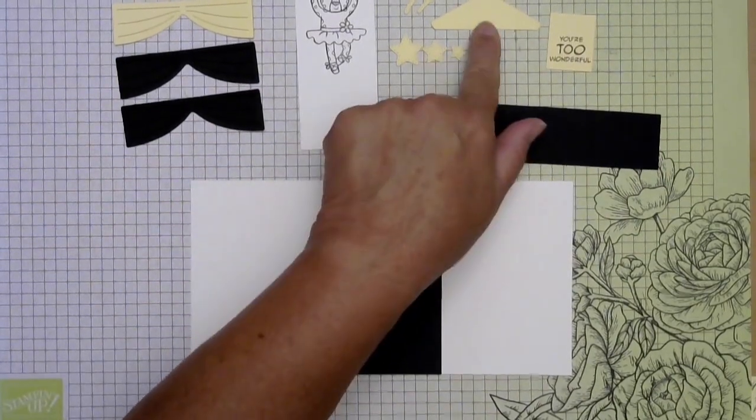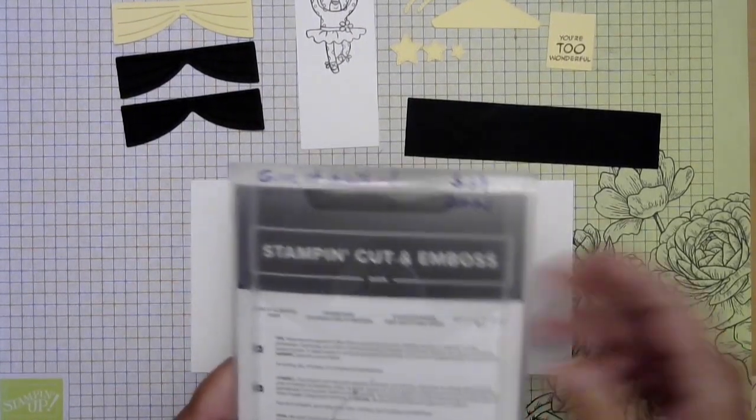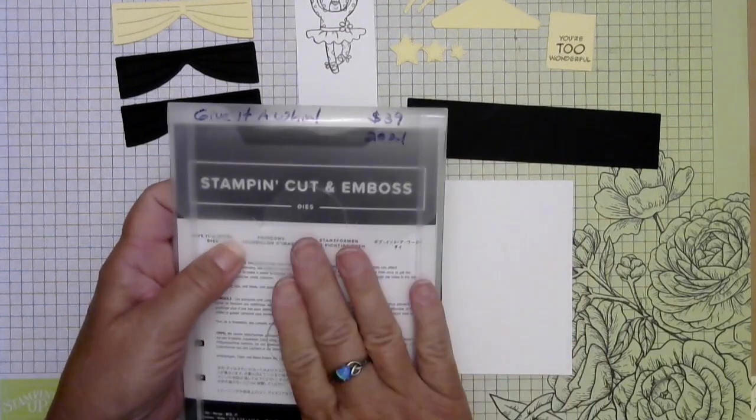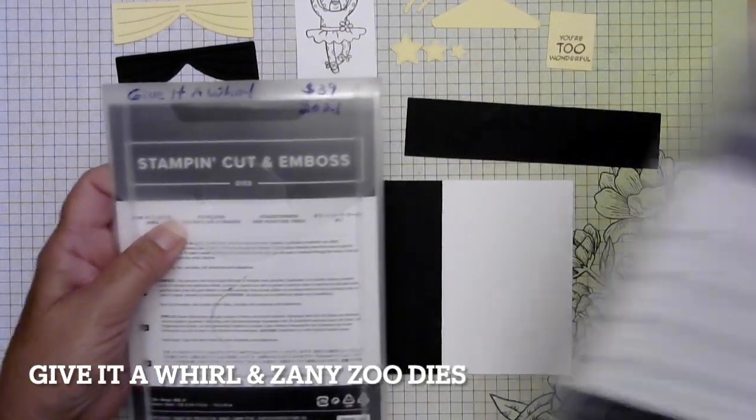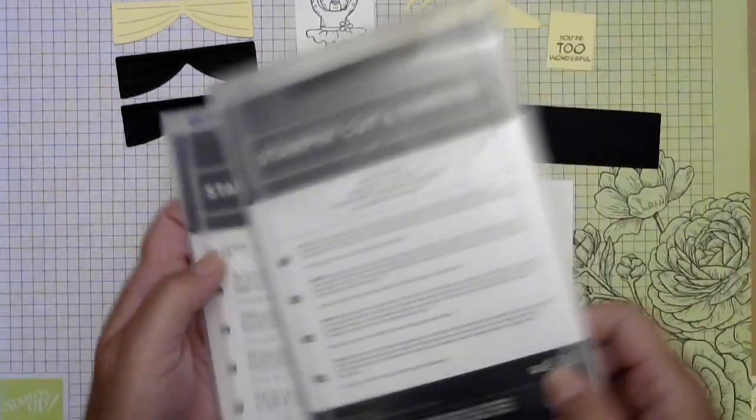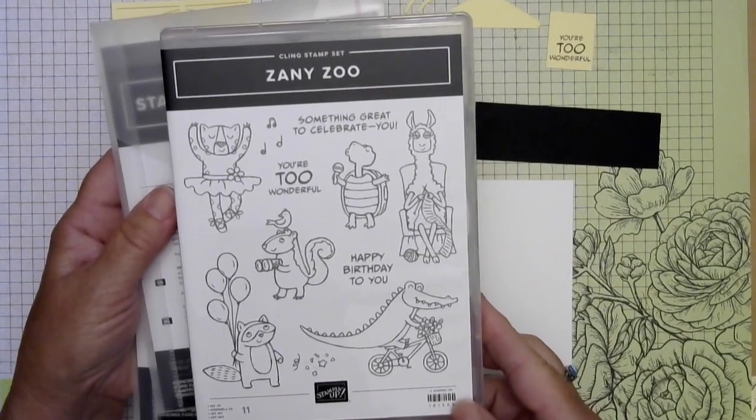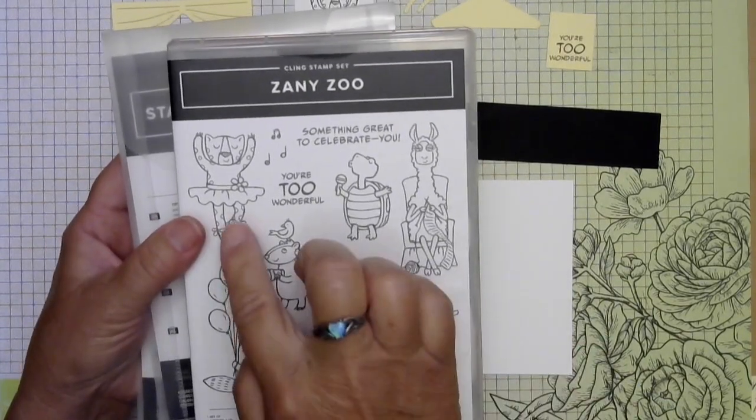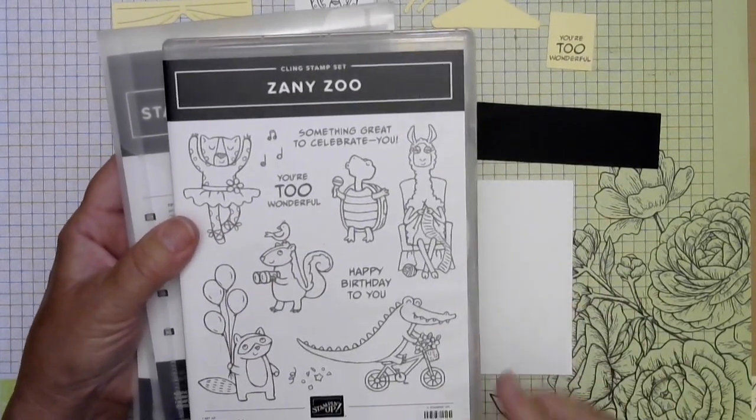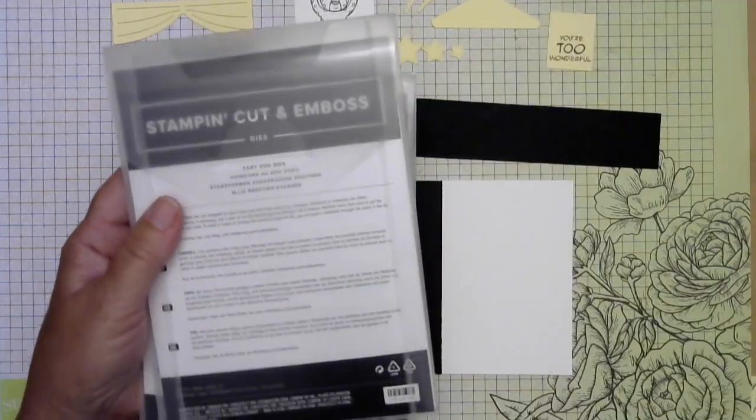Now for this spotlight piece, we're going to be using two different dies, the give it a whirl and the zany zoo dies which goes with the stamp set that I'm using here. The zany zoo which is our little dancer comes from and our greeting. It's got lots of fun little characters in it.